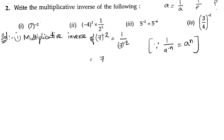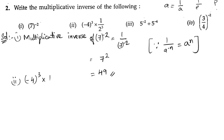So we get 7 to the power of 2. Seven squared is 49, so the answer is 49. Second bit: minus 4 to the power of 3. They have given minus 4 to the power of 3 into 1 by 2 to the power of 3.